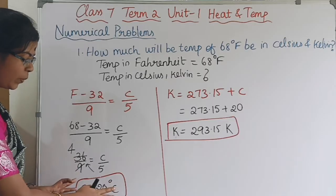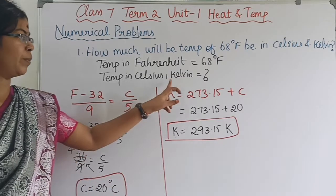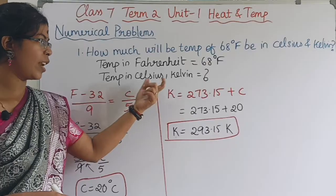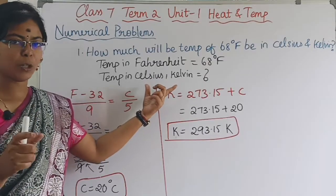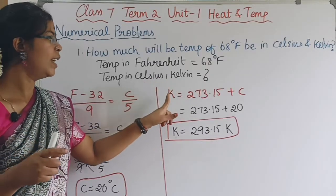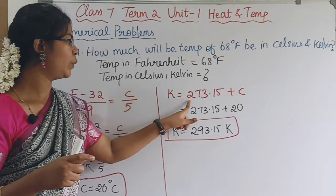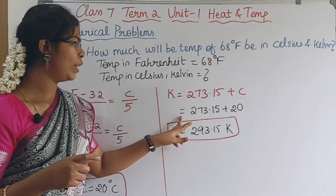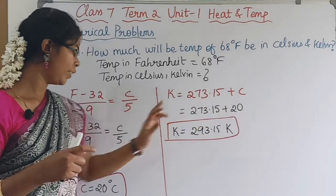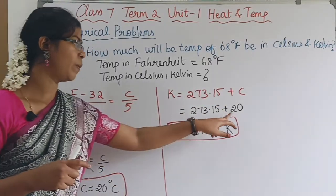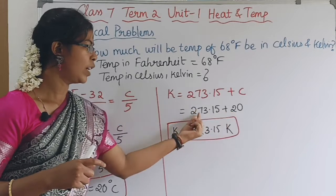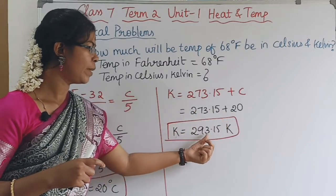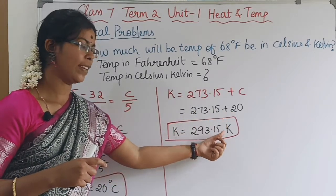Now we will convert Celsius to Kelvin. The formula relating Celsius to Kelvin is: K = 273.15 + C. Substituting C = 20, we get K = 293.15 K.